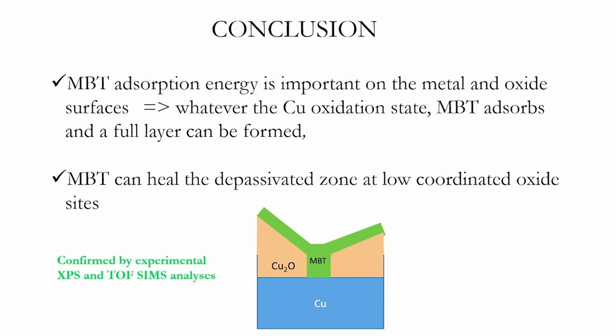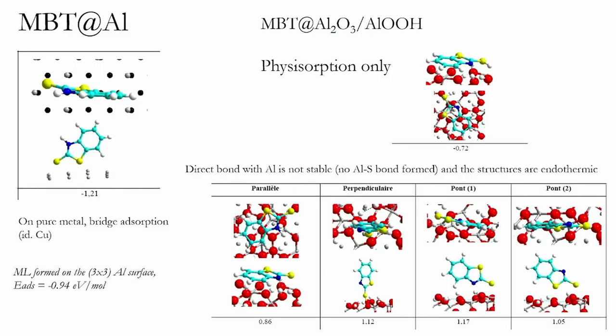The conclusion of the copper study is that MBT can cover the whole metal surface and also the oxide surface. However, the DFT showed that MBT adsorbs on aluminium metal and makes the same structure as on copper, but it does not adsorb on the aluminium oxide — making only bonds with oxygen, aluminium, or hydrogen bonds results only in physisorption. We believe physisorption is not exothermic enough to explain corrosion inhibition.